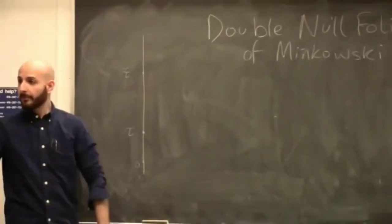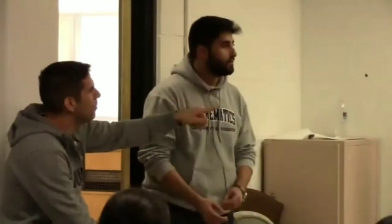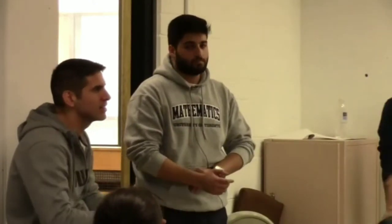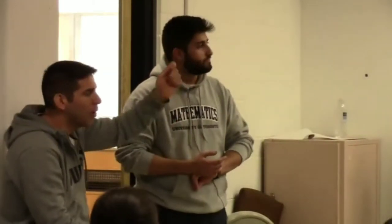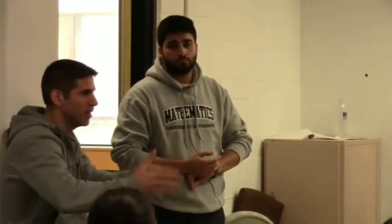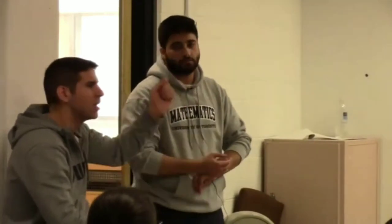Just to say, the double-null foliation is the collection of the two families of cones, right? Yeah, yeah, yeah. And that's why it's called double-null. Foliation means you foliate something, you cover something with other things. So, you cover your space-time with null cones. One way to cover it is with outgoing null cones. So, future-directed null cones with points on the time axis.